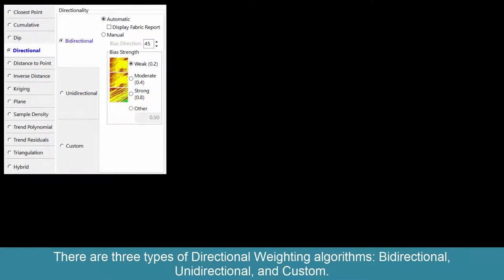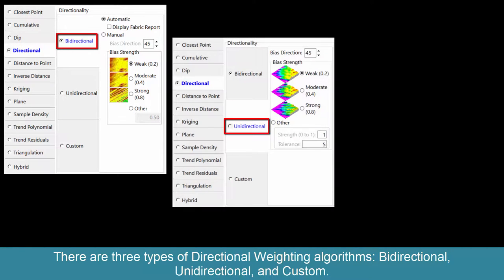There are three types of directional weighting algorithms: bidirectional, unidirectional, and custom.